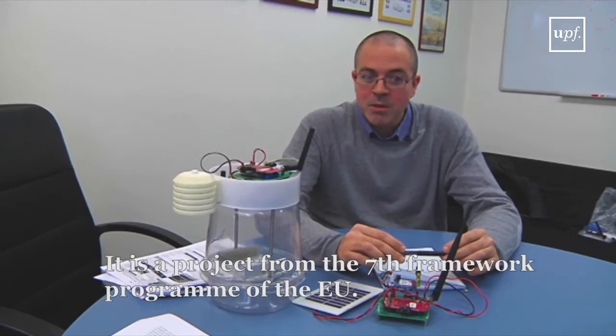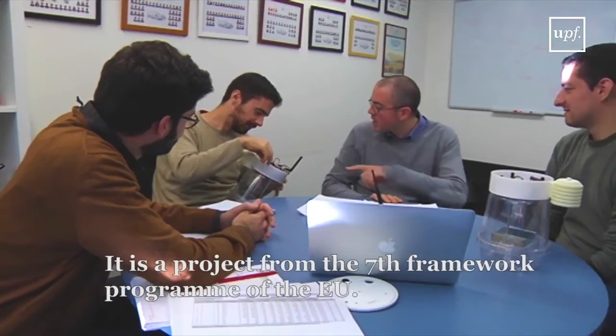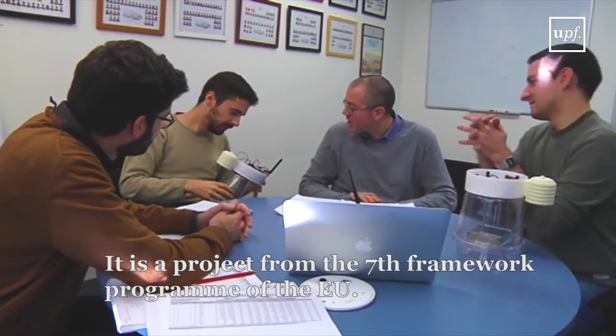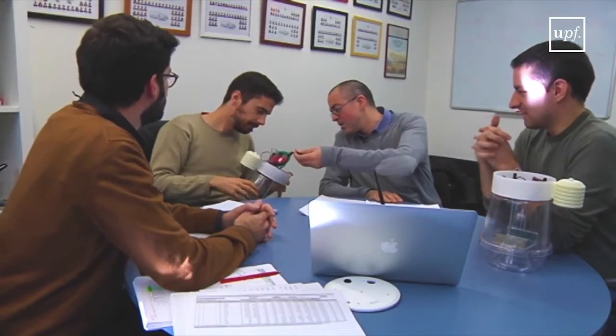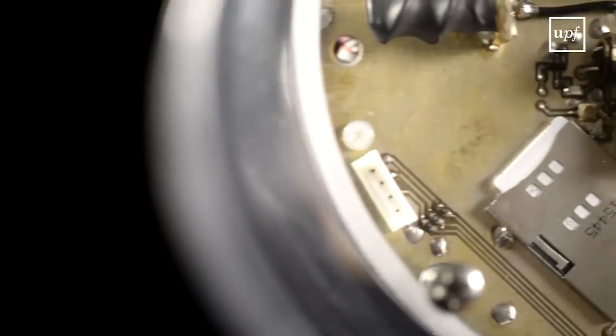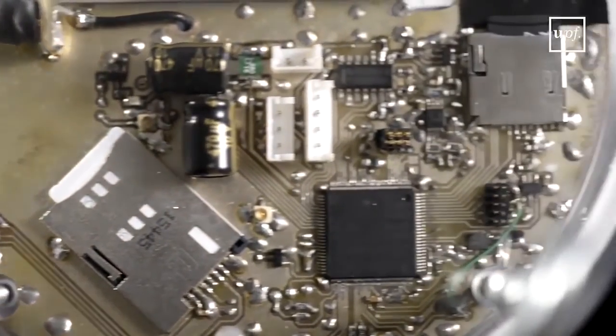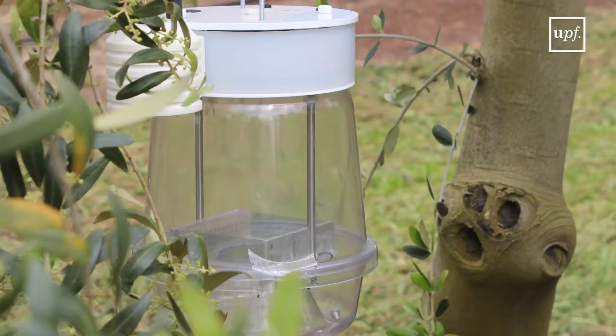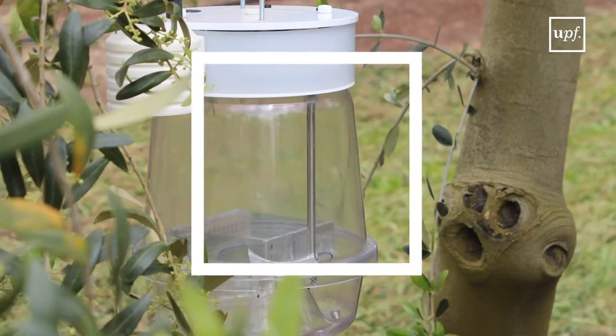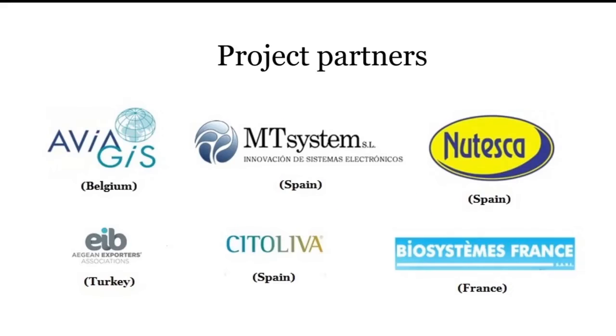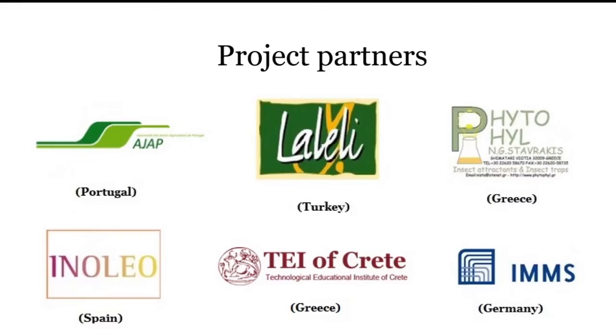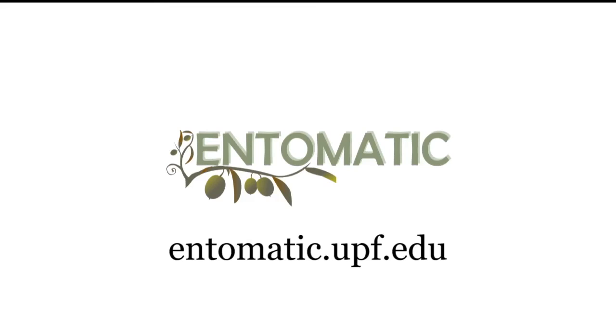It is coordinated from UPF and it involves several partners from different European countries and also Turkey. It includes 4 RTDs, 5 SMEs and 3 associations related to the oil production.